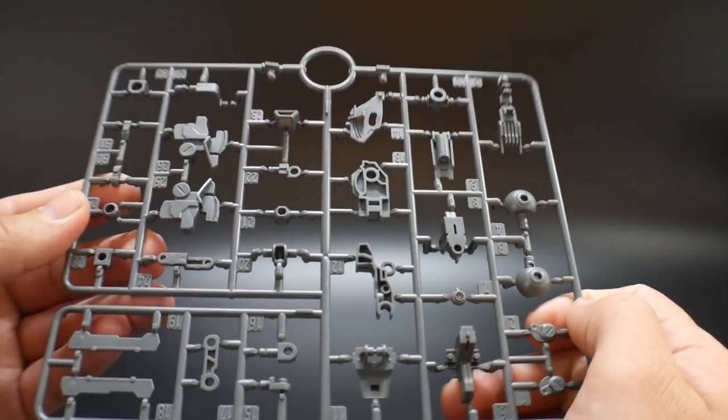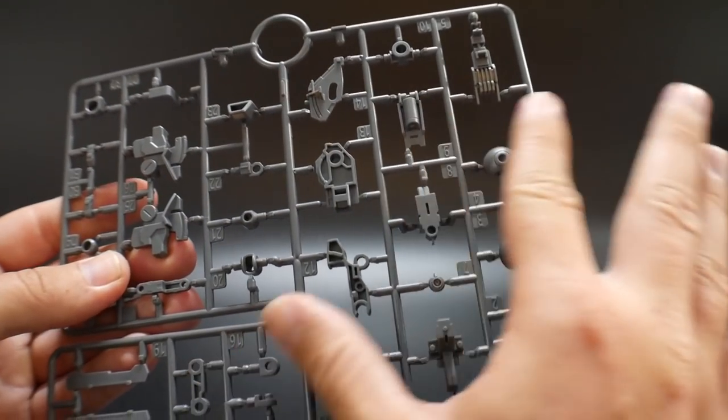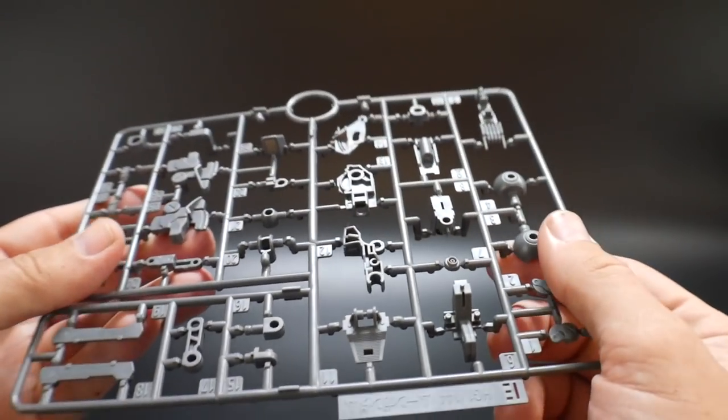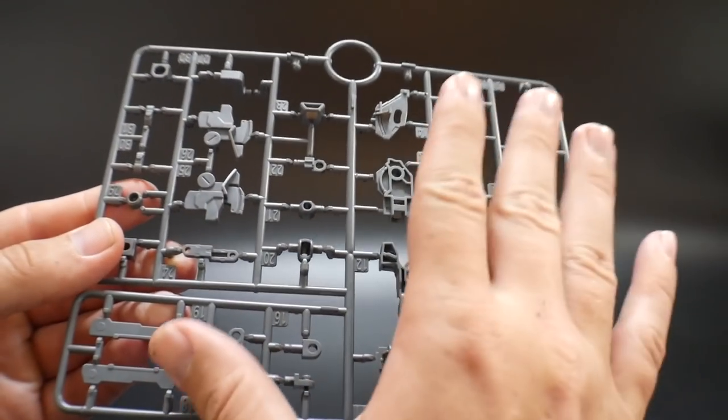This is going to be runner E, and it's going to have a nice little, it's almost like a matte gray color. This is all going to be the inner frame. Looks like this might be parts for the backpack. But definitely all the inner frame right inside here, and it looks pretty good.